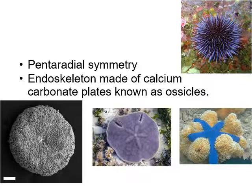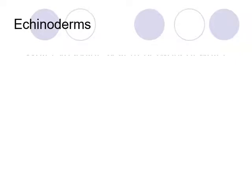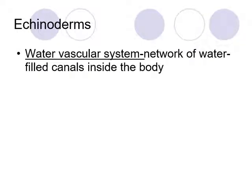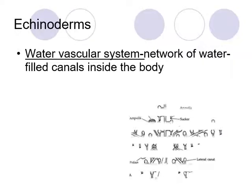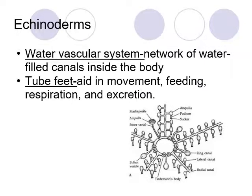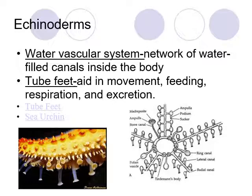Echinoderms have an endoskeleton made up of calcium carbonate plates known as ossicles, which protect them and make them tough. Many echinoderms like starfish have a water vascular system — instead of blood, they use water to pump things around through a network of water-filled canals. Connected to this are tube feet, as seen in the picture below, which aid in movement, feeding, respiration, and excreting waste. As water pumps through the starfish, it fills up some tube feet moving them forward and releases others, actually using water pressure to help the starfish move along the ocean floor.